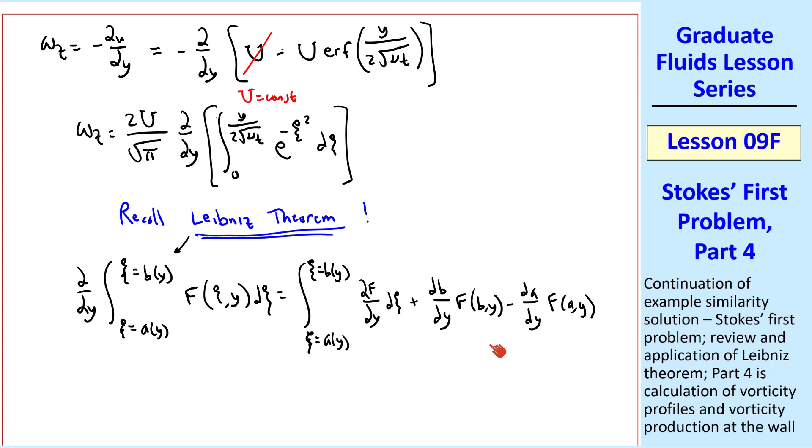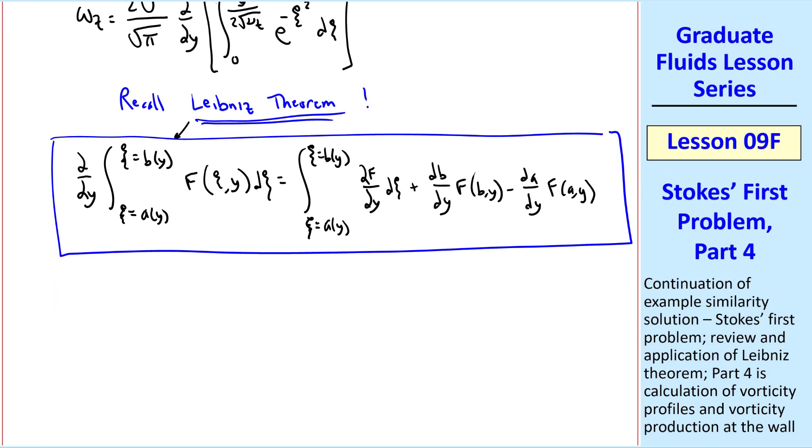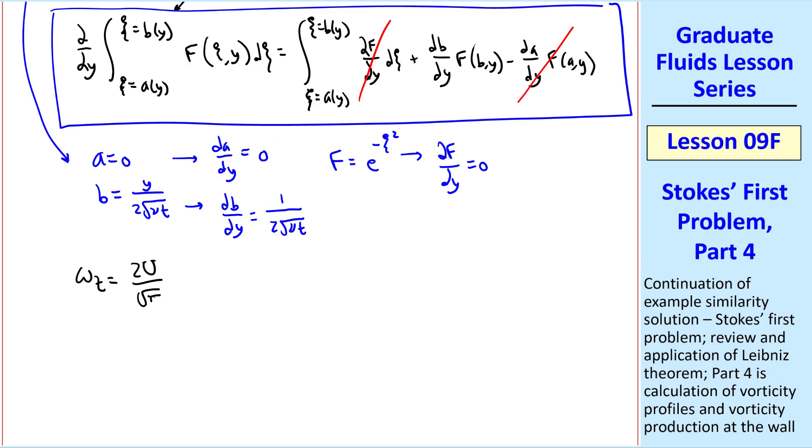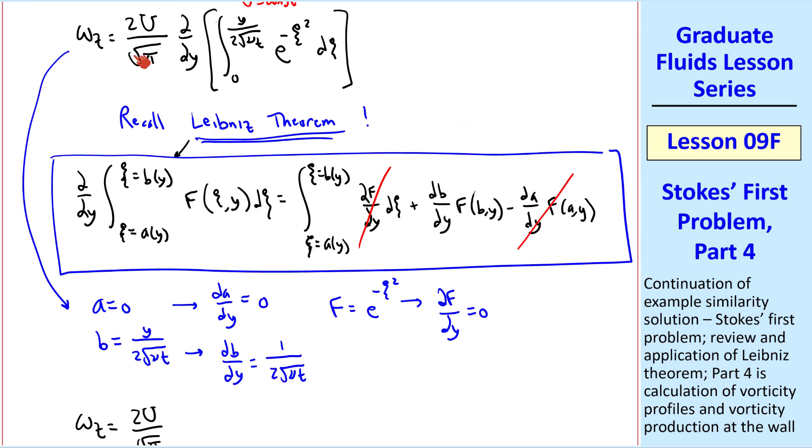I write Leibniz theorem here, which has these three terms. Let's evaluate these derivatives and other terms. In our equation, a equals zero, b equals y over 2 square root of nu t, dA dy is therefore zero, and dB dy is 1 over 2 square root of nu t. Function capital F is e to the minus psi squared from here, and del capital F del y is zero. So this term is zero, because of this, and this term is zero, because of this, but the middle term remains. Therefore omega z is 2U over square root of pi, from up here, and then this term comes from Leibniz.